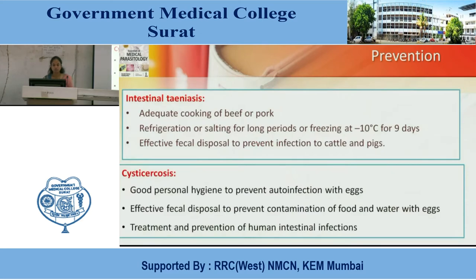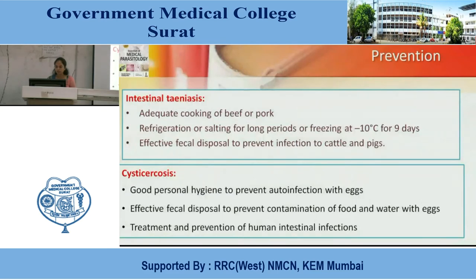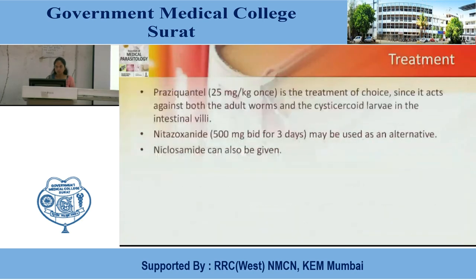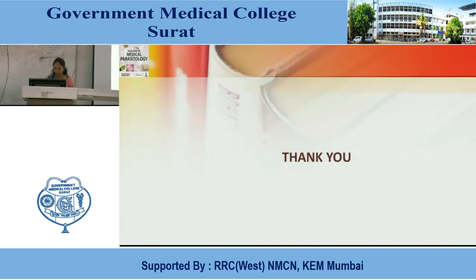Prevention. Intestinal taeniasis: adequate cooking of beef or pork; refrigeration or salting for a long period, or freezing at -10°C for 9 days; effective fecal disposal to prevent infection of cattle and pigs. Cysticercosis: good personal hygiene to prevent auto-infection with eggs; effective fecal disposal to prevent contamination of food and water with eggs; treatment and prevention of human intestinal infections. Praziquantel is the treatment of choice; niclosamide is an alternative. Thank you, bye bye.